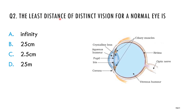Question two: the least distance of distinct vision for a normal eye is? That is, what is the minimum distance at which you are able to see an object clearly? Options: infinity, 25 cm, 2.5 cm, 25 m. The correct answer is 25 cm. Within 25 cm, you are able to see an object.